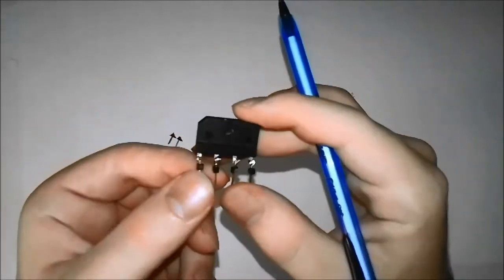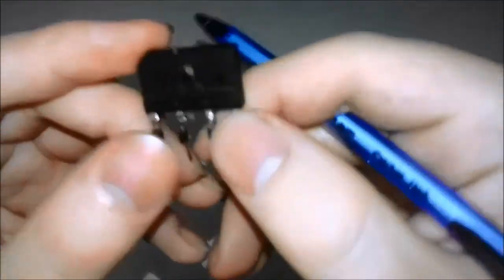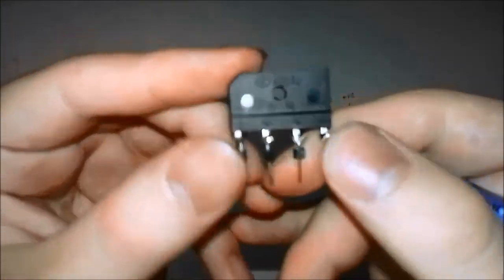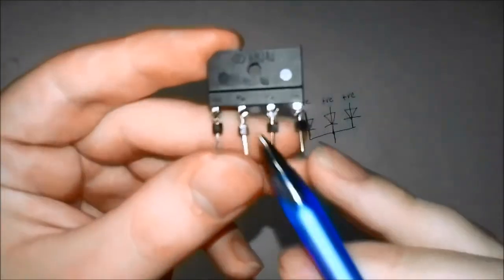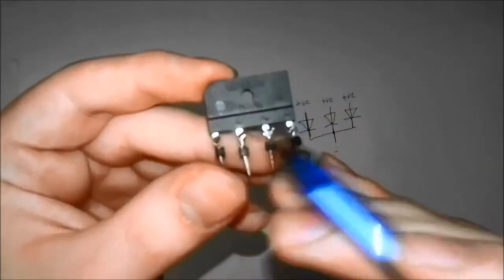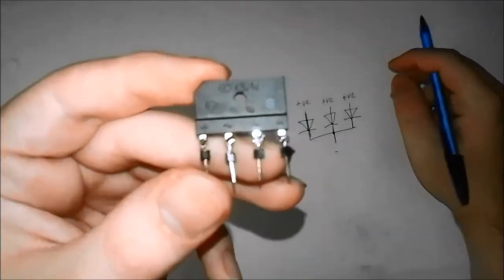This is an example of one all in the same package. You might be able to see, there we go, there's a plus, a minus, and two squiggles for the AC in. You put your AC in there, and the positive voltage comes out there, and then the negative voltage comes out there.